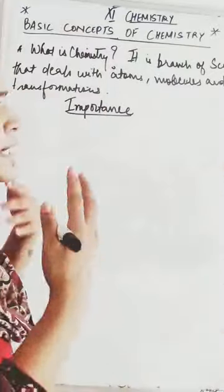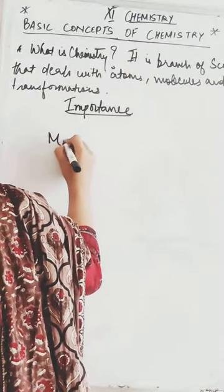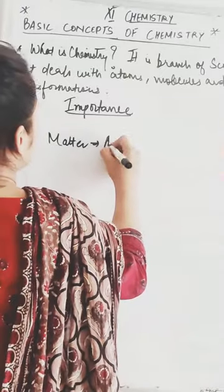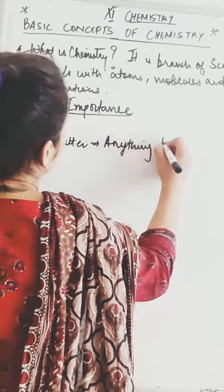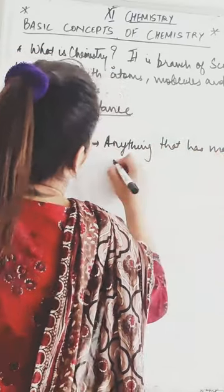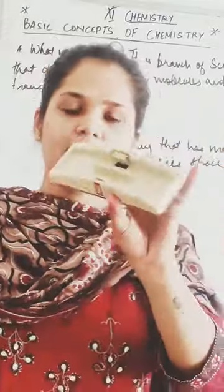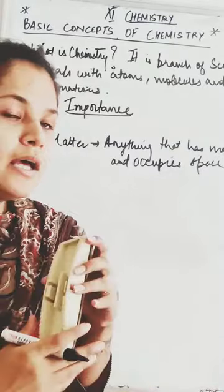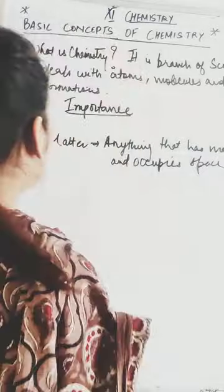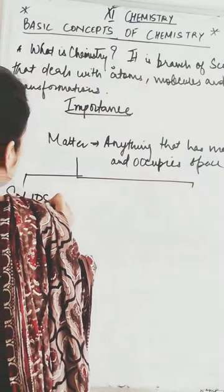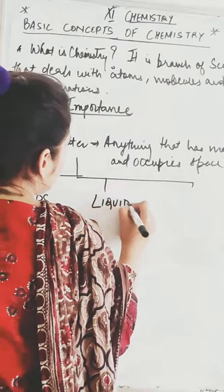Now the next very basic thing that comes in our mind is — what is matter? This we have seen in very junior classes also. Matter is anything that has mass and occupies space. For example, this duster — it has some weight and it is occupying some space, so it is matter. Matter is also all around us. Matter is divided into three categories — there are three states of matter: solids, liquids, and gases.